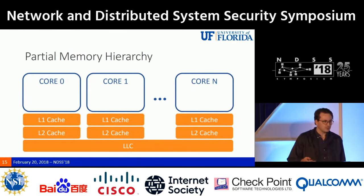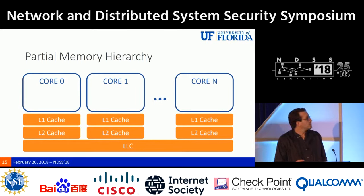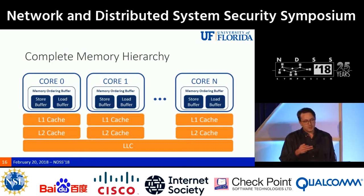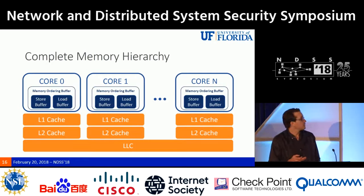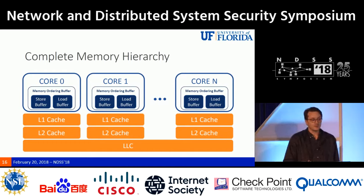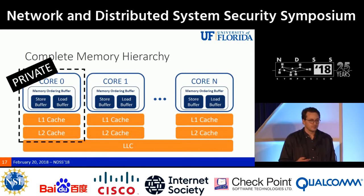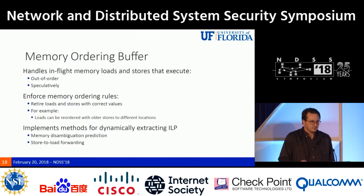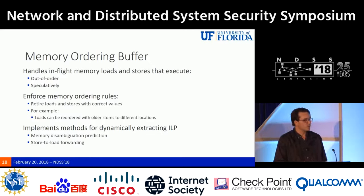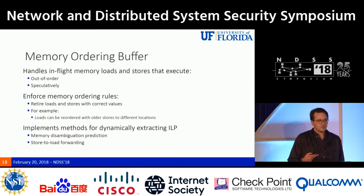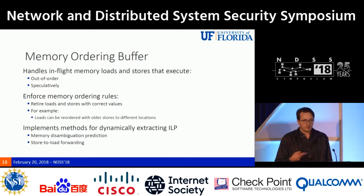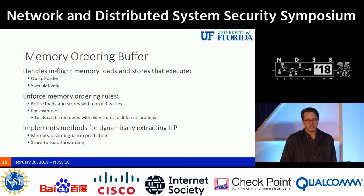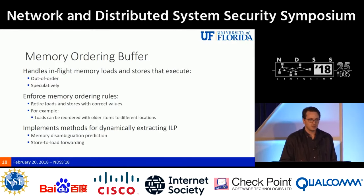Going back to our multi-core architecture, the complete memory hierarchy includes a memory order buffer comprised of a store buffer and a load buffer, which is private to each individual core. The memory order buffer handles in-flight memory loads and stores that execute out of order and speculatively. It's employed for enforcing memory ordering rules and is generally used to dynamically extract instruction-level parallelism using memory disambiguation prediction and store-to-load forwarding.